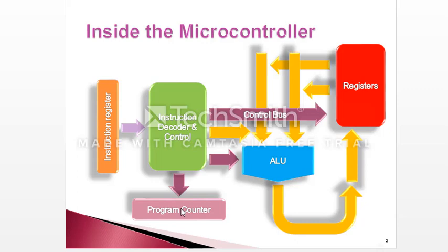First of all, the program counter holds the address of the memory location where your code is stored. Then the instruction register points to that memory location at which the program counter is pointing. It reads the instruction from that memory location and fetches that instruction to the instruction decoder and controller.